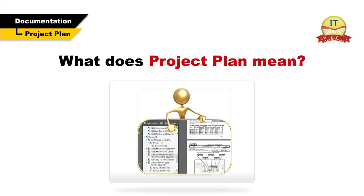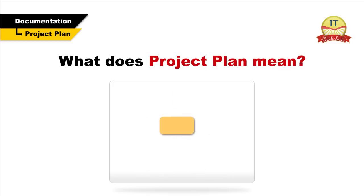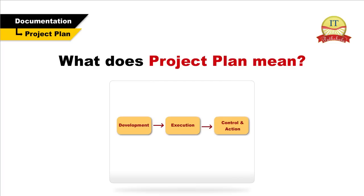The project planning phases can be broadly classified as follows: development of the project plan, execution of the project plan, and change control and corrective actions. Project planning is an ongoing effort throughout the project life cycle.